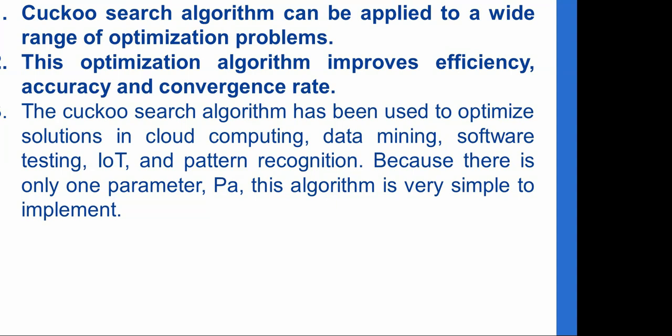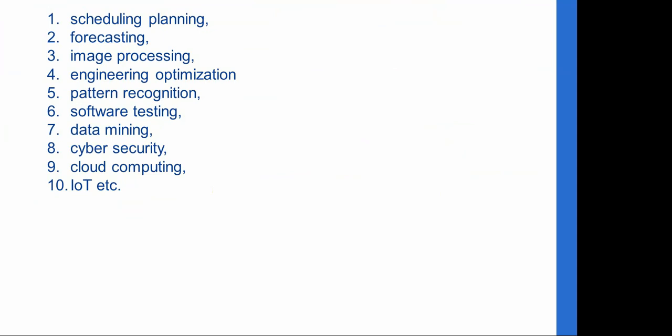The Cuckoo Search Algorithm can be applied to a wide range of optimization problems, improving efficiency, accuracy, and convergence rate. It has been used in cloud computing, data mining, software testing, IoT, and pattern recognition. Because it has only one parameter P_a and is simple to implement, it is also applied in scheduling, planning, forecasting, image processing, engineering optimization, and cybersecurity.